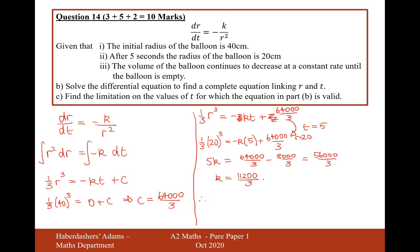So therefore, the answer to part b is 1 third r cubed equals minus 11,200 over 3. In fact, let's just cancel out all these thirds. Minus 11,200 t plus 64,000. So there we are, that's the equation for r in terms of t. r cubed equals minus 11,200 t plus 64,000.